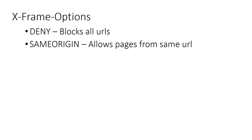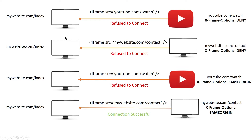Now let's see some examples. Here we have four scenarios. We have our website on the left which renders the index page, and our index page has an iframe pointing to youtube.com. The XFrame Options is set to deny. The browser on our client will refuse to connect because XFrame Options is set to deny — so any URL, no matter what, will not be rendered.